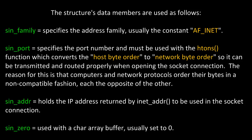Let's extrapolate on the structure's data members further. sin_family specifies the address family and is usually the constant AF_INET for most socket communication programs. sin_port specifies the port number and must be used with the function HTONS, which converts the host byte order to network byte order so it can be transmitted and routed properly. Computers and network protocols order their bytes in a non-compatible fashion, so HTONS handles the conversion. sin_addr holds the IP address returned by INET_ADDR, and sin_zero is used with a character array buffer and usually set to 0.